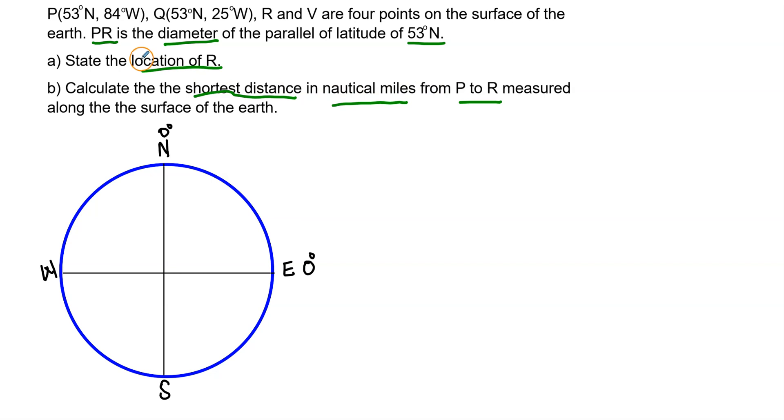So let's start with filling in the information that we have. P is at 53 degrees north, 84 degrees west. So 53 degrees north, how do we put that in? Well, we start from the equator. So equator is our zero. North is going from that point upwards. South is that way. So our zero is here.